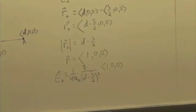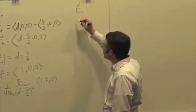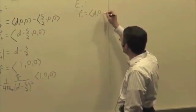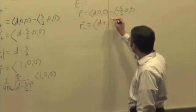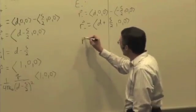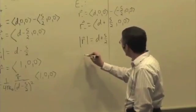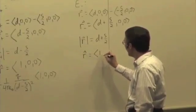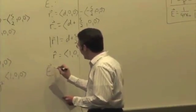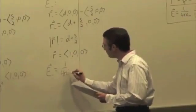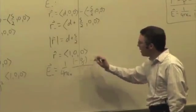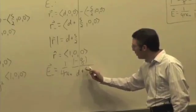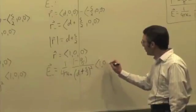For the electric field due to the negative charge, r-minus is (D, 0, 0) minus (−S/2, 0, 0), giving (D + S/2, 0, 0). The magnitude is D + S/2, and the unit vector is still (1, 0, 0) — still pointing in the positive X direction from the negative charge to location A. So E-minus = (1/4πε₀) × (−Q)/(D + S/2)² × (1, 0, 0).